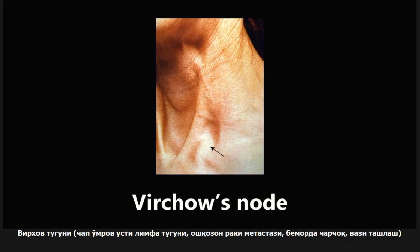This next one is an example of Virchow's node, seen right here. Virchow's node is a left supraclavicular lymph node that can be a sign of metastasis of cancer from the stomach. If they tell you about some type of mass right above the clavicle on the left, with patient having fatigue, weight loss, think Virchow's node and metastasis from stomach cancer. The node will be hard and enlarged.